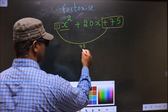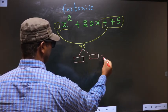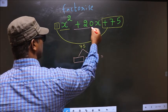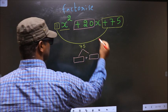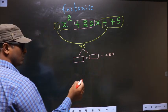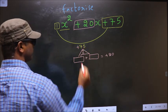Now you should look out for 2 numbers such that when you add these 2 numbers, you should get the middle coefficient, that is plus 20, and also when you multiply, you should get plus 75.